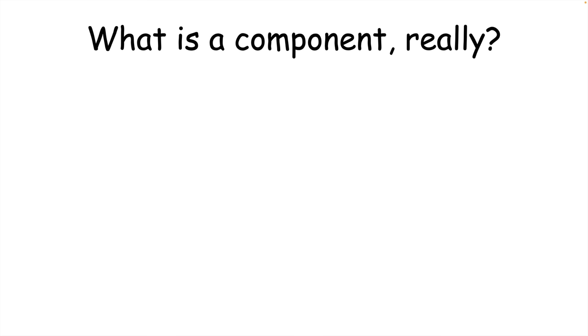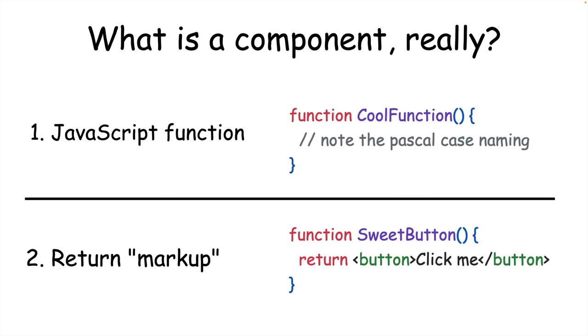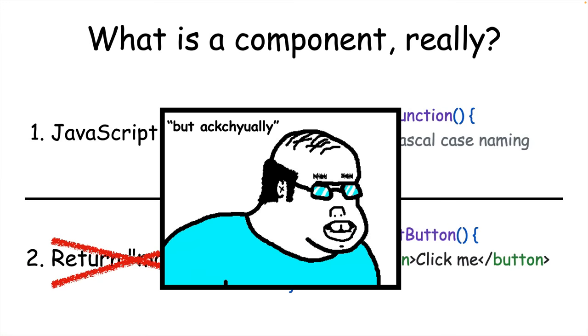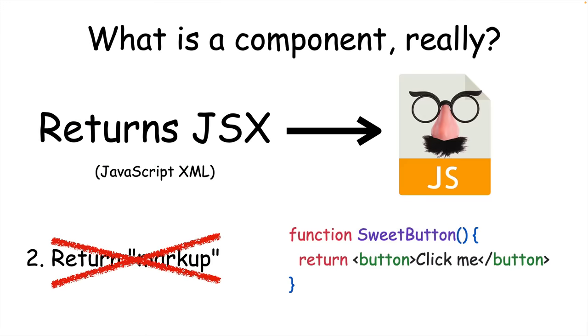Every React component is a JavaScript function that returns markup. But since React is a JavaScript library, React components don't return HTML markup. They actually return something called JSX, which is JavaScript in disguise.